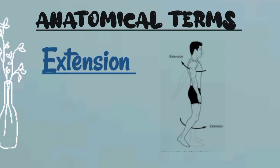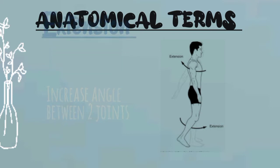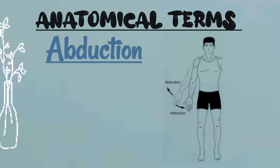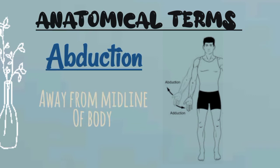Now let's talk about extension. Extension is the opposite movement to flexion — it means there is an increase in the angle of the joint. For example, if you stretch your arm backward it would be the extension of the shoulder joint. If you stretch your knee from a bending position, it would be the extension of the knee joint, which increases the angle between the two joints.